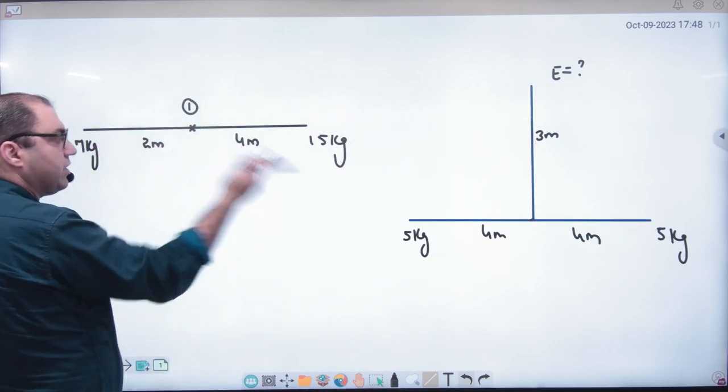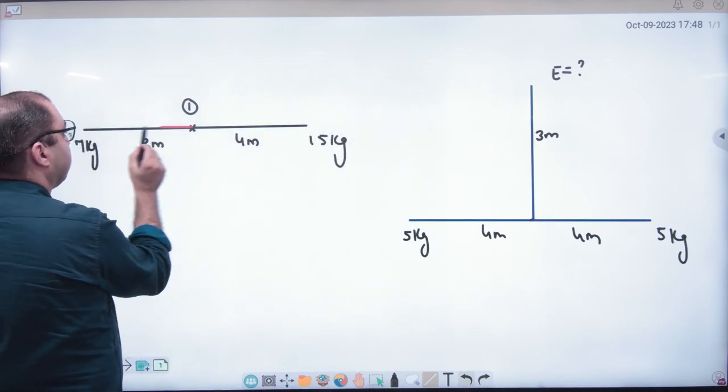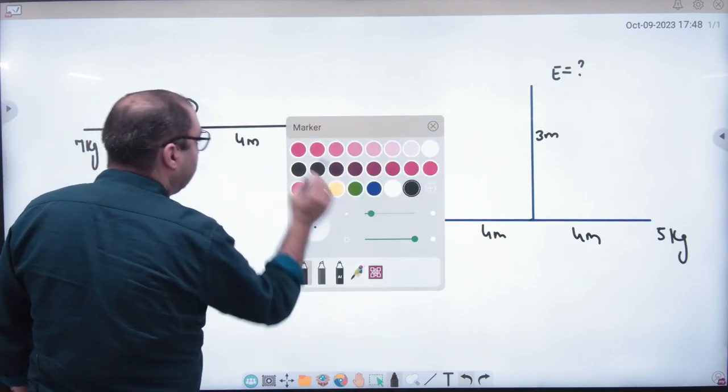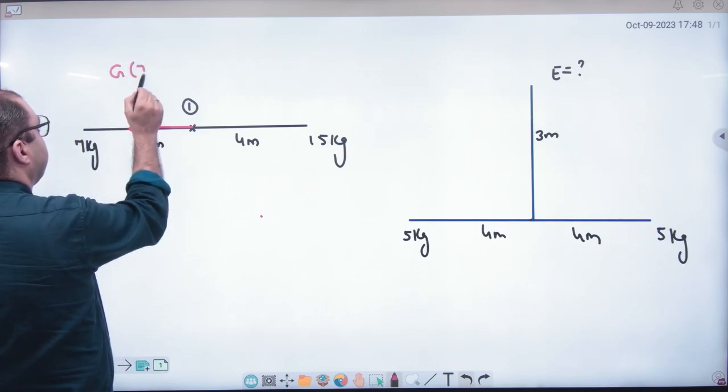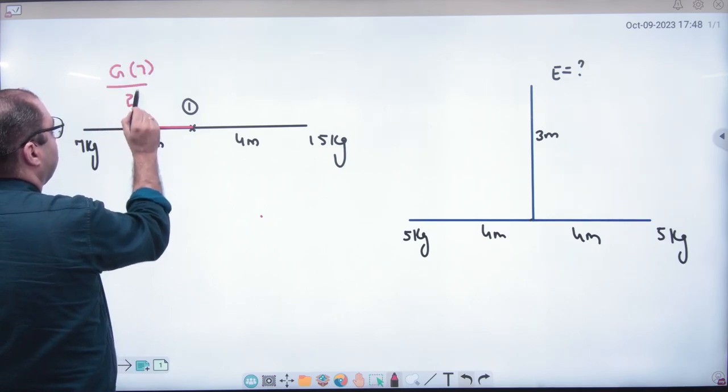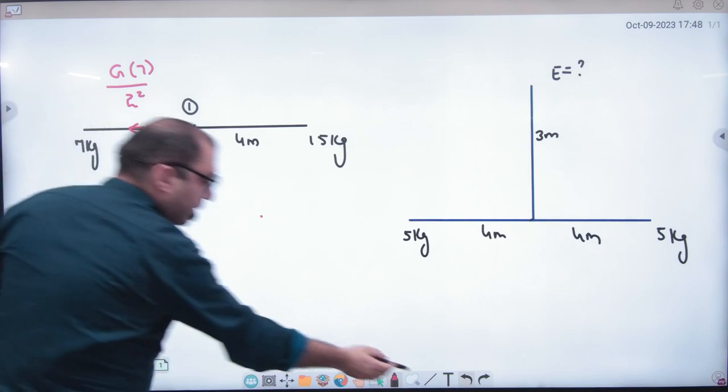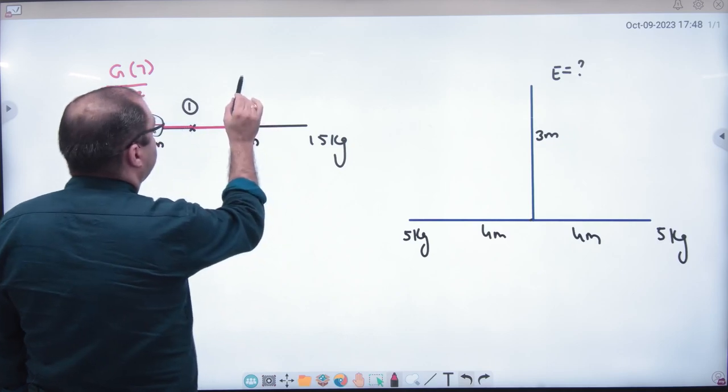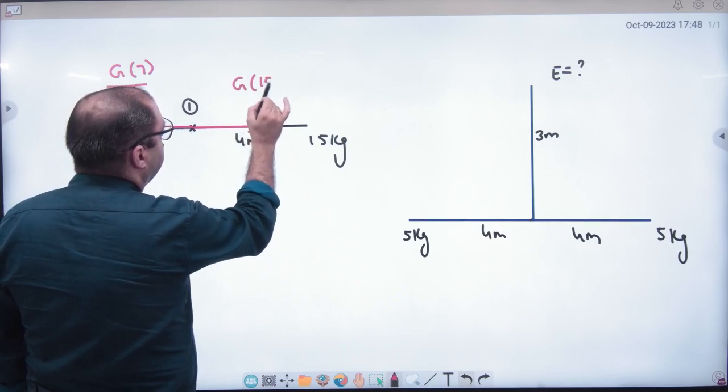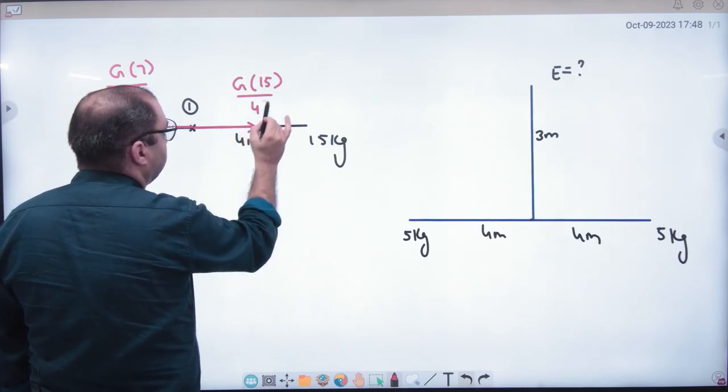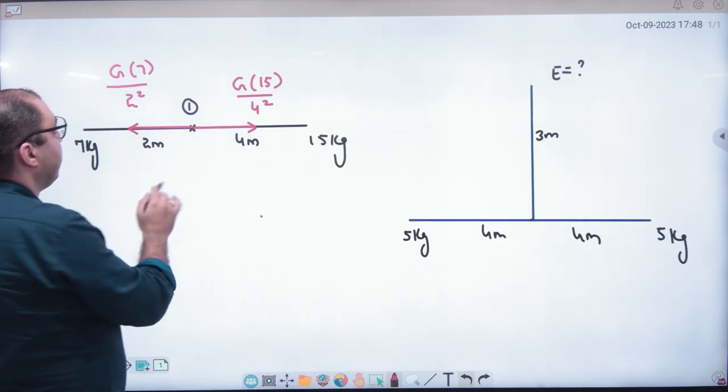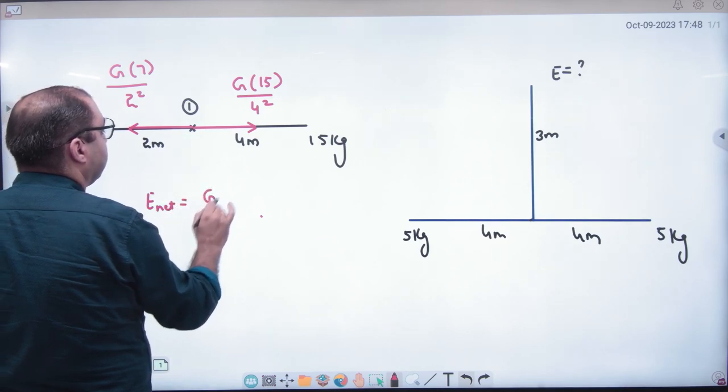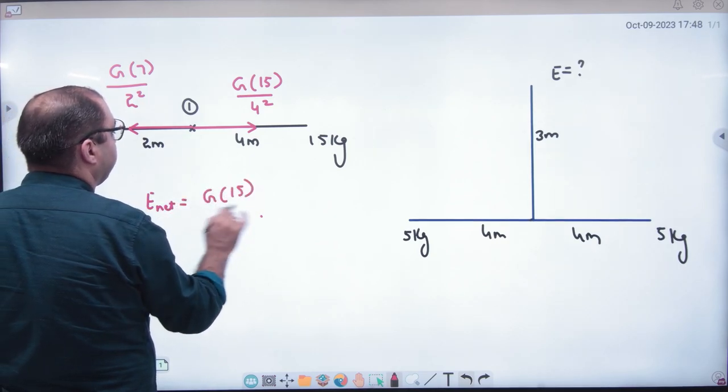E will put 15 kg, what will attract this one. E will put G into 7 divided by 2 square. In that way this 15 kg what will attract G into 15 divided by 4 square, Gm by r square. So with the big value, what will I do, minus G into 15 divided by 4 square.